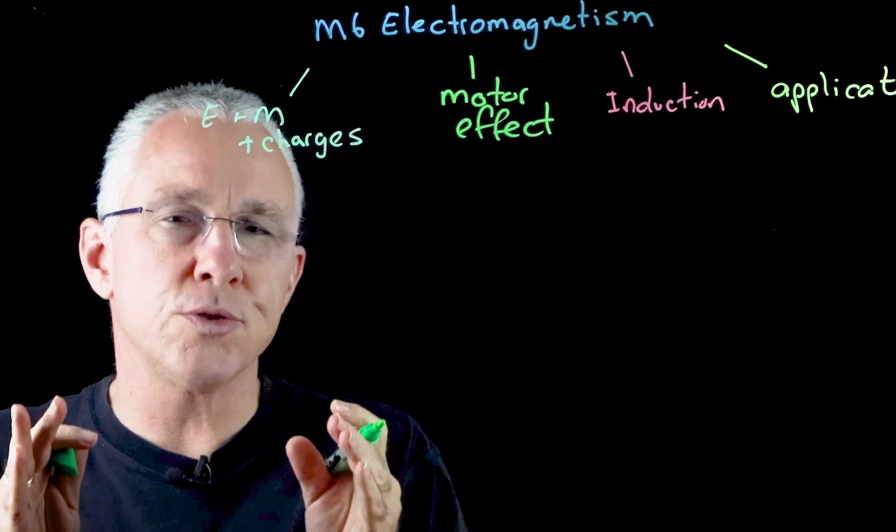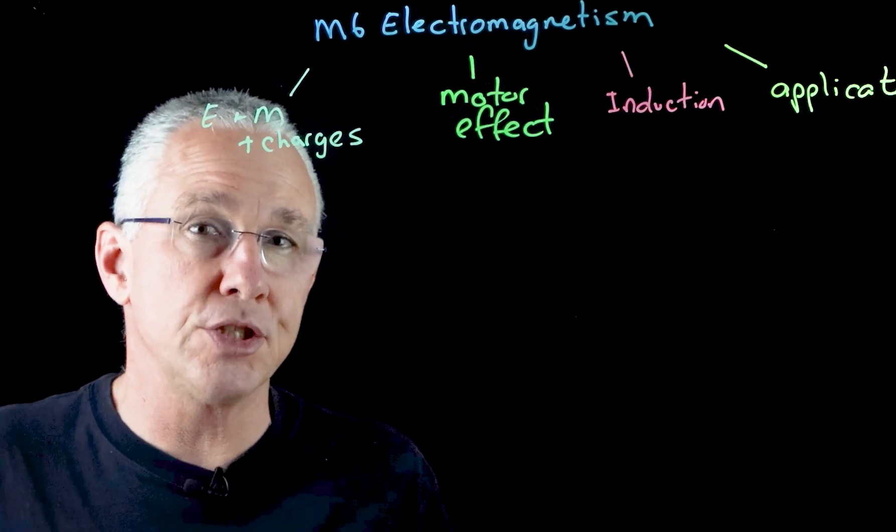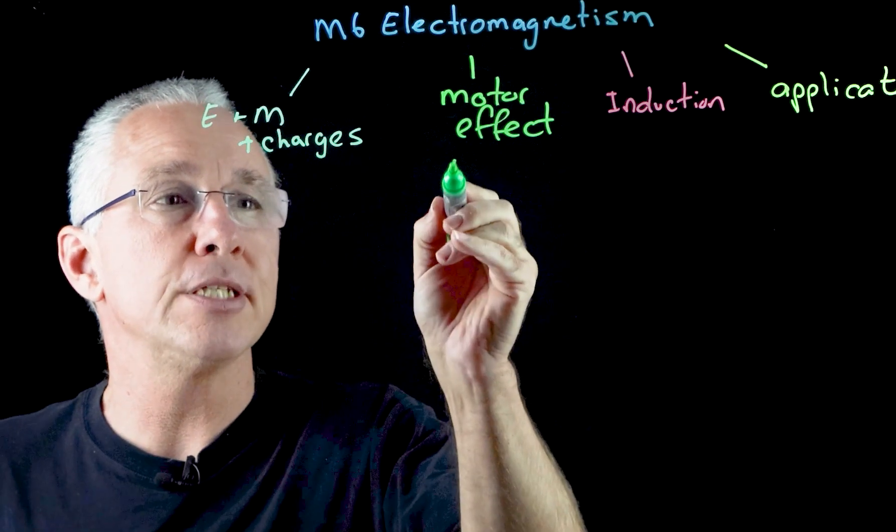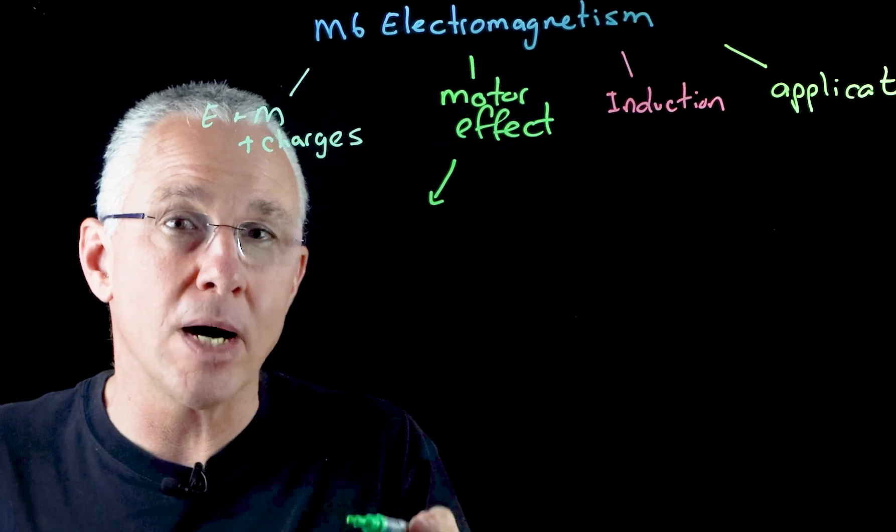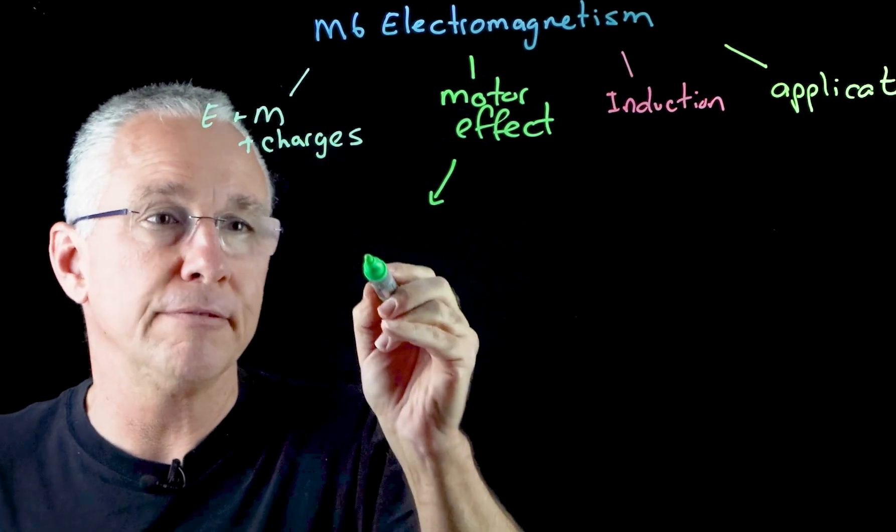Now the syllabus refers to the motor effect in two discrete situations. The first situation it looks at is if you have a current bearing wire in a uniform magnetic field.